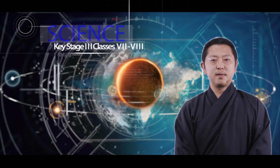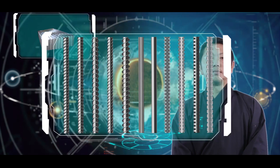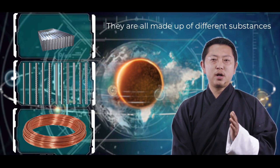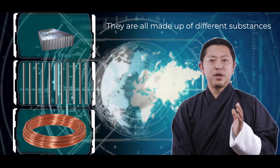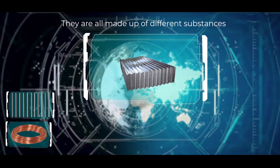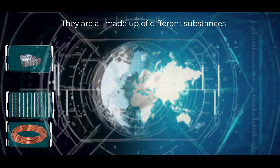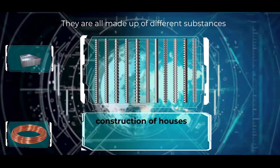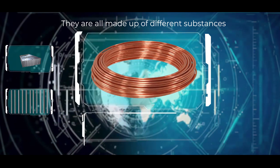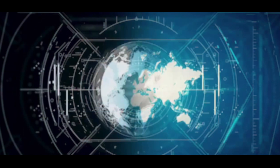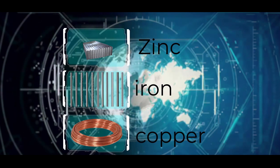Before we begin our lesson, let us have a look at these pictures. In this picture, the materials shown are all made up of different substances. The material in picture 1 is a common material used in roofing — it is made up of zinc. The material in picture 2 is used as a section of houses — it is made up of iron. And the material in picture 3 is made up of copper. These substances like zinc, iron and copper are called elements.